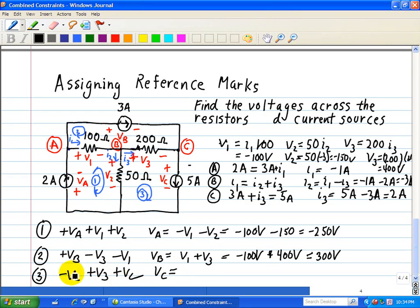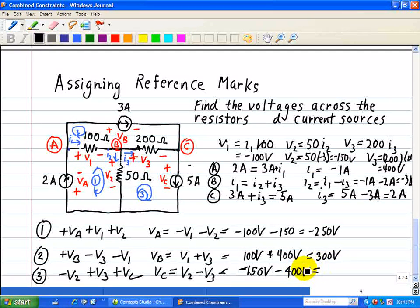Solving for VC is equal to plus V2 minus V3. So we know what V2 is, it's equal to minus 150 volts, minus 400 volts for V3. Since it's minus V3, therefore it's minus 550 volts.